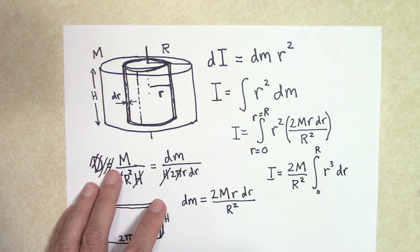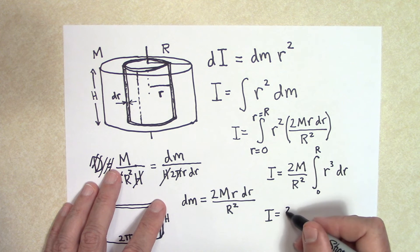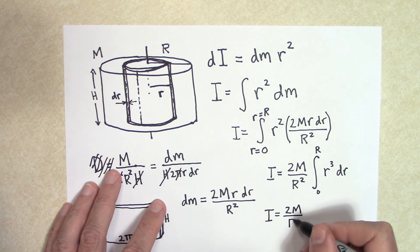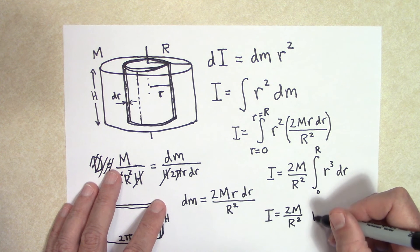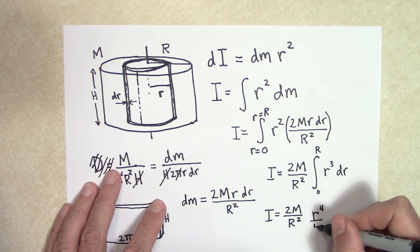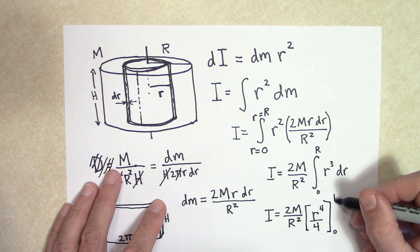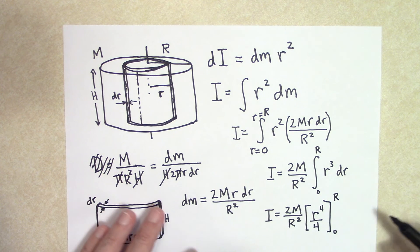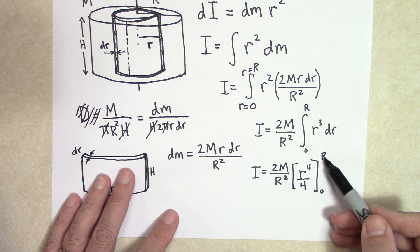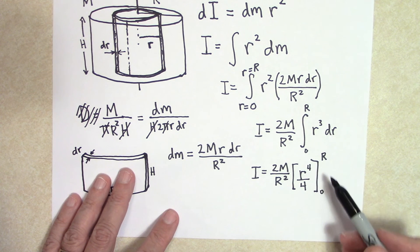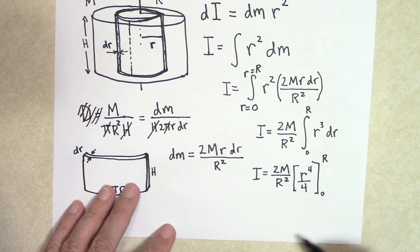So let's go ahead and take that integral then. So I is equal to 2m over r squared. And then the integral is going to be r to the fourth power over four. And that's going to be from zero to R. If we sub in, and I get a little more real estate down here, if I sub in the capital R first, and then I subtract it, when I get done with that, I'm going to sub in the zero, subtracting that.